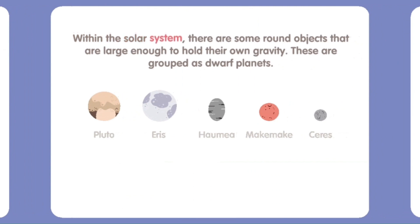Within the solar system, there are some round objects that are large enough to hold their own gravity. These are grouped as dwarf planets.